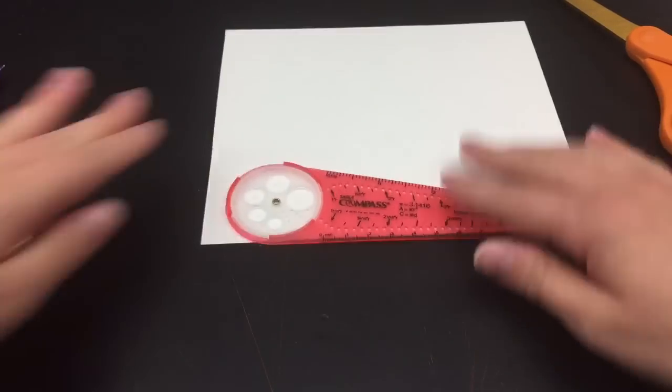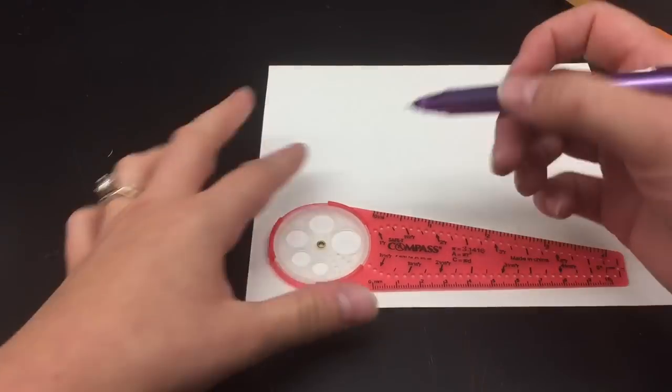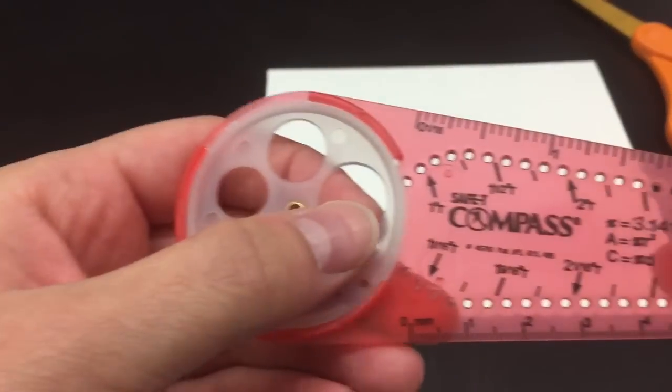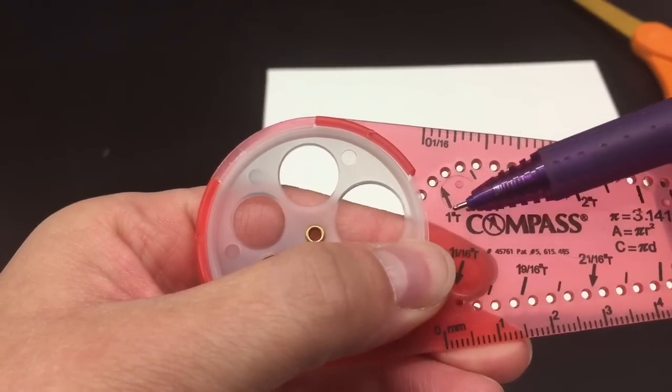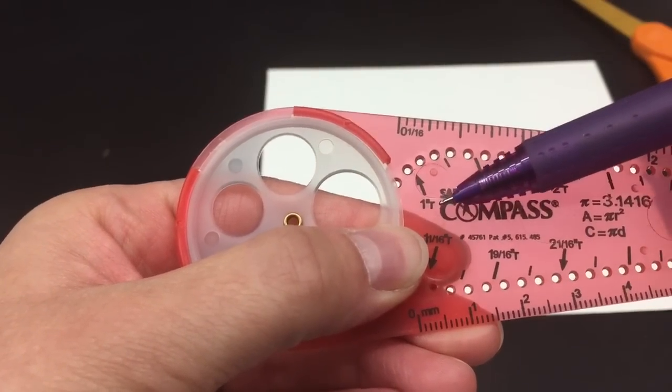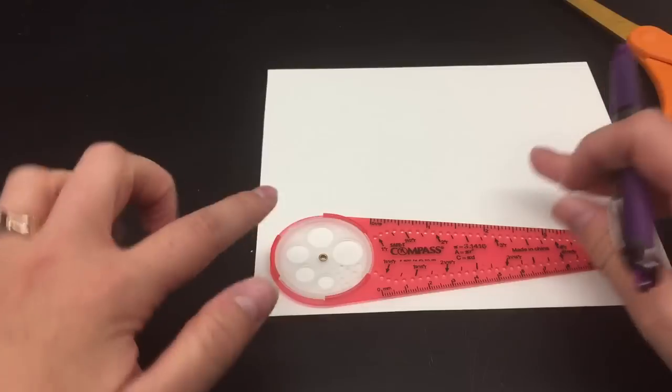To do that, we're going to use our compass and make our circle have a radius of R. If you look right here, we see this little R with a little inches mark, and it says one R. That means it will have the radius of R.